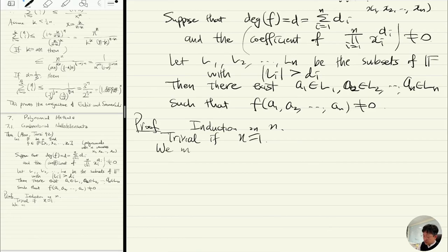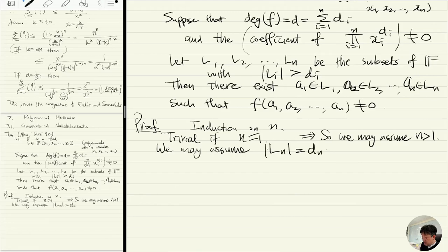Now we may assume n is bigger than one, and we can also assume that Ln has exactly dn+1 elements, because if we have more than dn+1 we can just ignore one and the conclusion is the same.